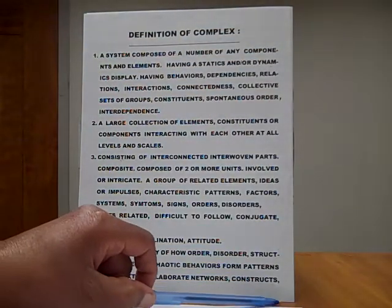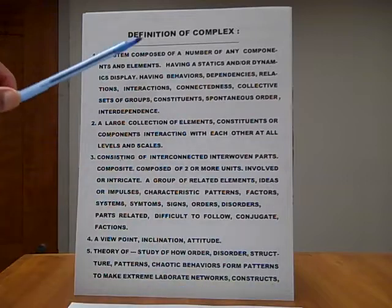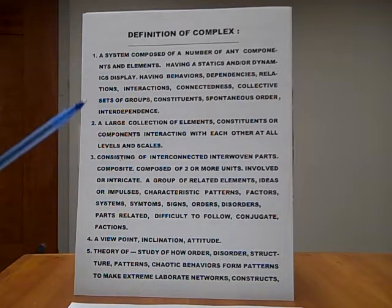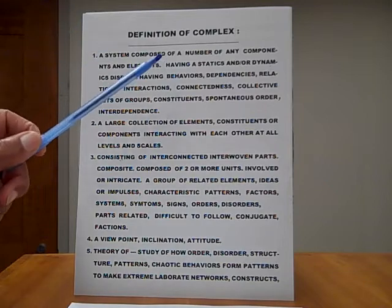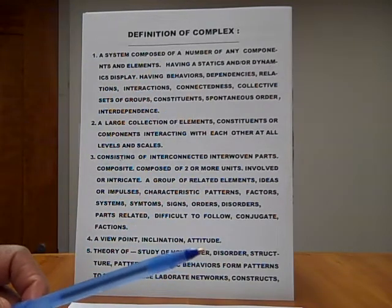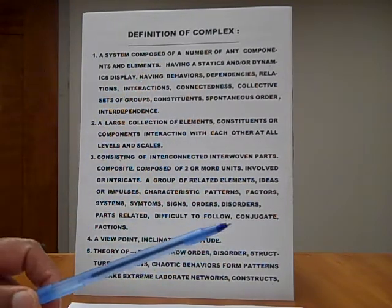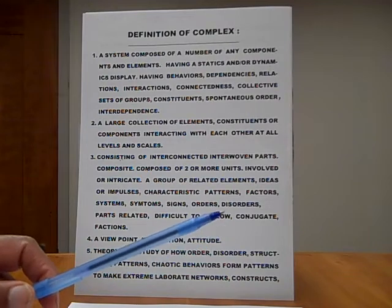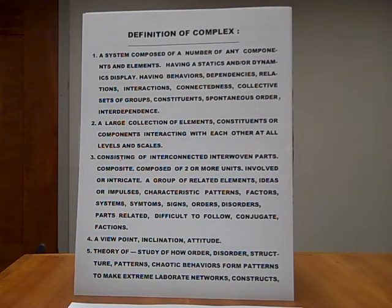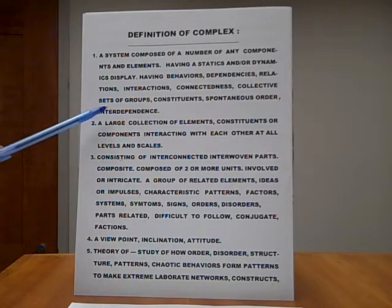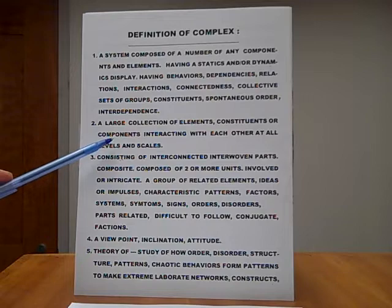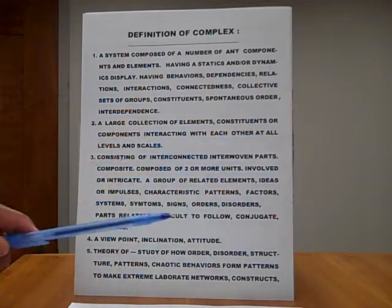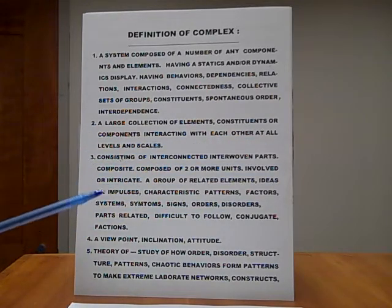Definition of Complex 1. A system composed of a number of any components and elements, having a statics and or dynamics display, having behaviors, dependencies, relations, interactions, connectedness, collective sets of groups, constituents, spontaneous order, interdependence. Number 2. A large collection of elements, constituents, and components interacting with each other at all levels and scales.